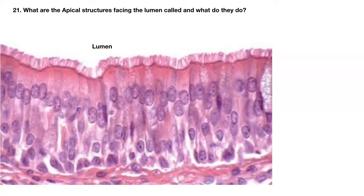Number twenty-one. What are the apical structures facing the lumen called, and what do they do?